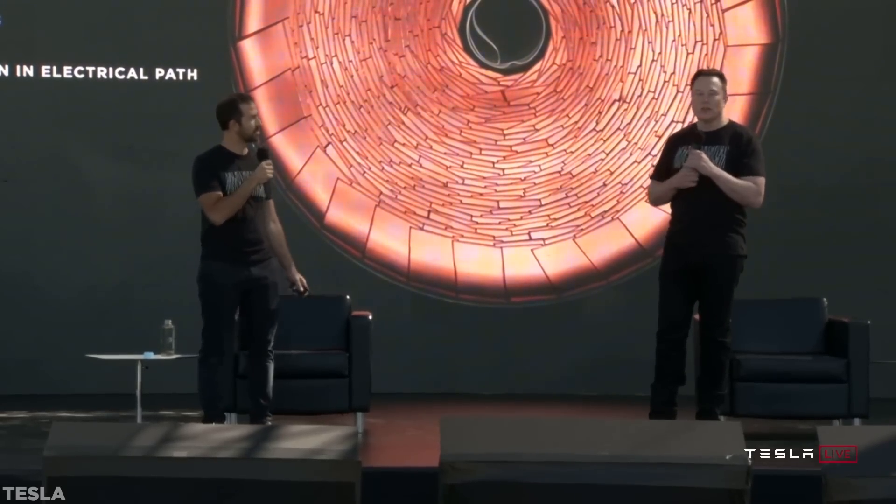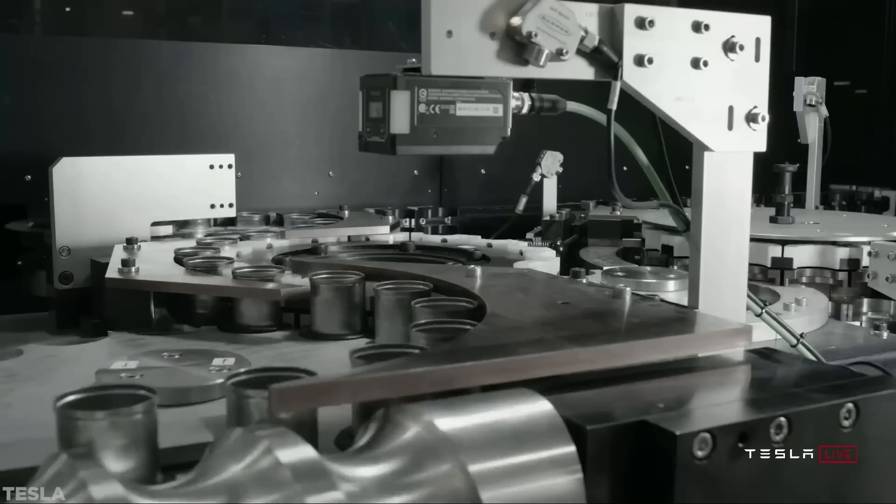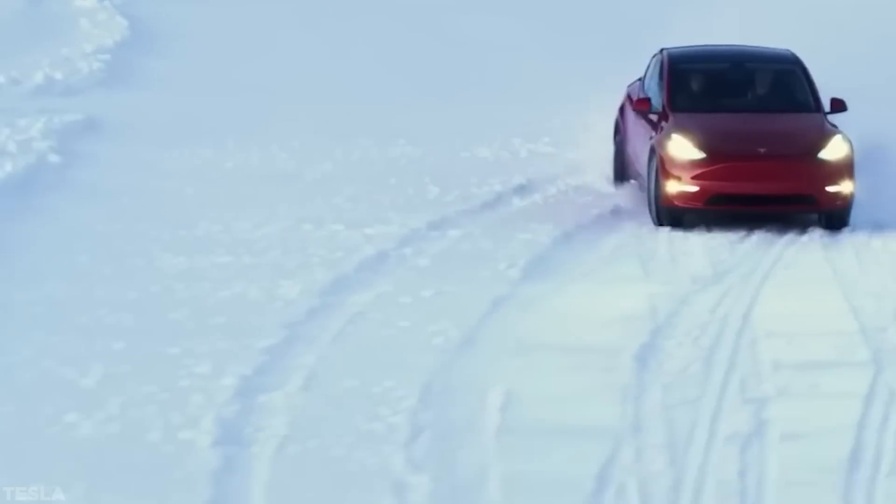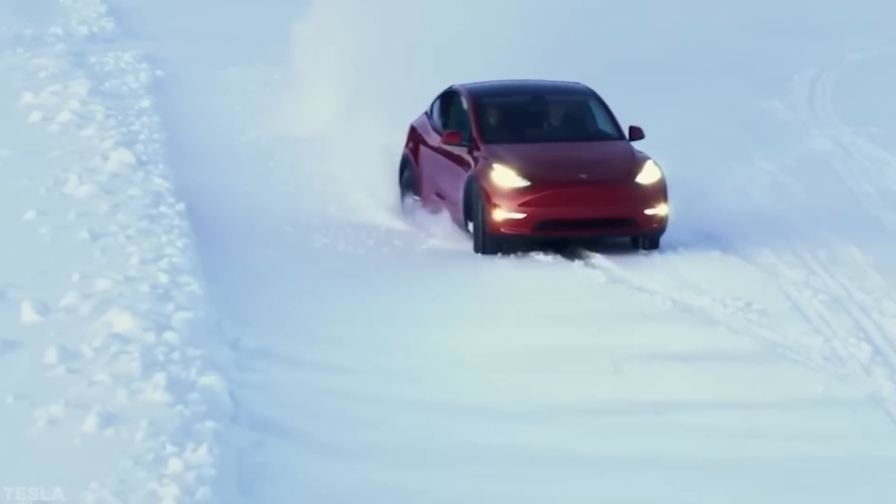The design uses bumps, spikes, ridges, and cavities which help layers attract to one another naturally. These new cells measure 46 by 80 millimeters, hence the name 4680. They're bigger than the current cells too, which brings added benefits.